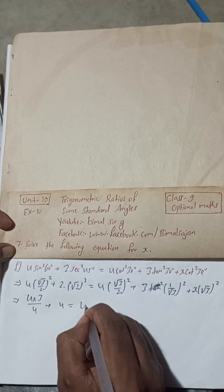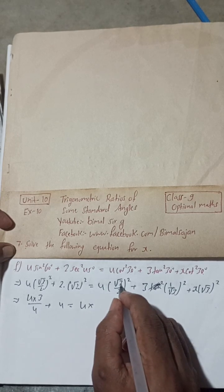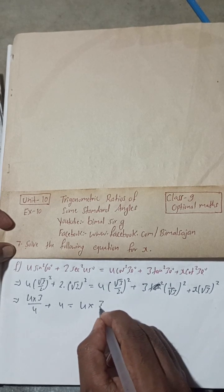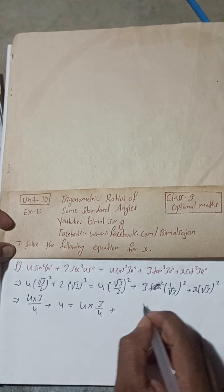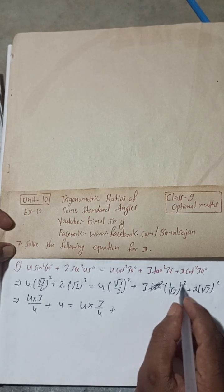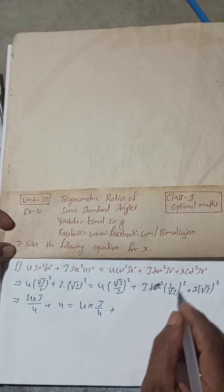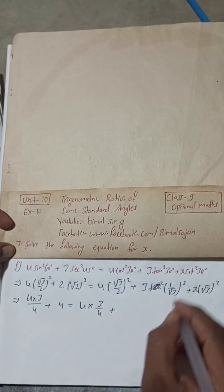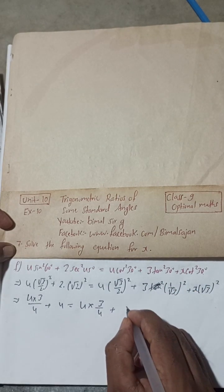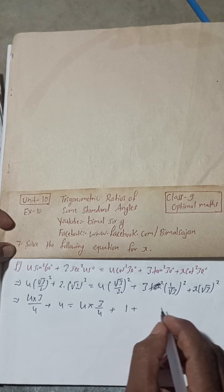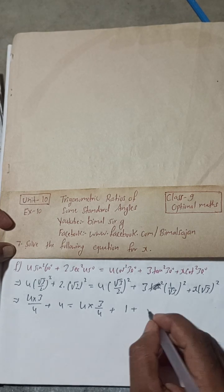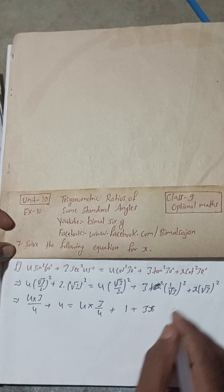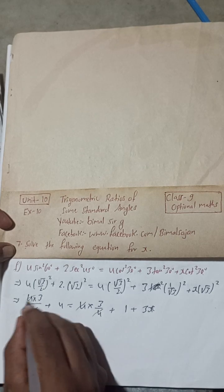equals 4 into root 3 square is 3 by 2 times 2 is 4, plus 1 square is 1, and root 3 square is 3, so 3 divided by 3 will cancel. That means there is 1, plus root 3 square is 3, so 3x. Now, this 4, this 4 cancel, this 4, this 4 cancel.